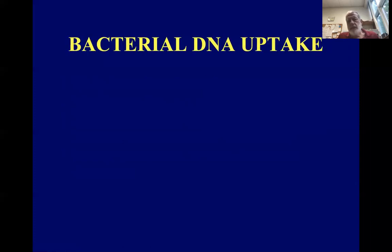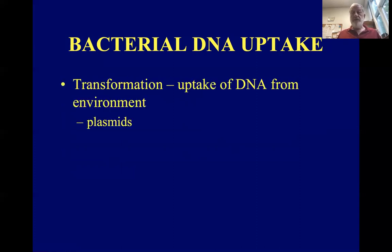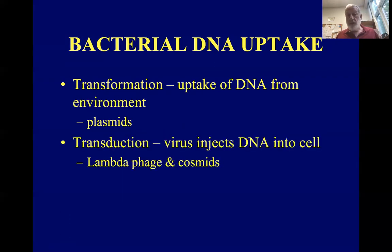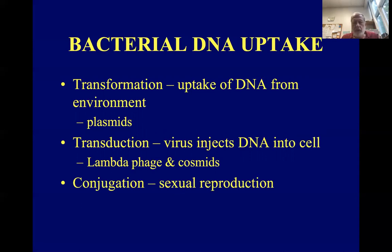Now, getting the vector into the cell — usually a bacterial cell. Transformation is how plasmids get into bacterial cells. Transduction is how we get them in with lambda phage and cosmids, where a virus injects the DNA into the cell. Bacterial sexual reproduction is called conjugation, where they exchange genetic material; that's not normally used in gene cloning, but transformation and transduction certainly are.